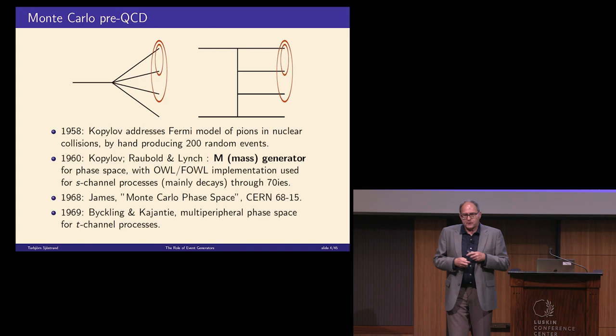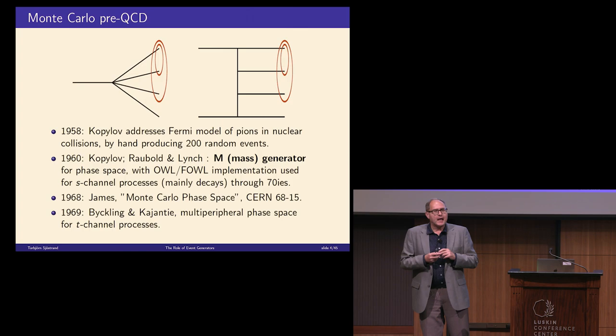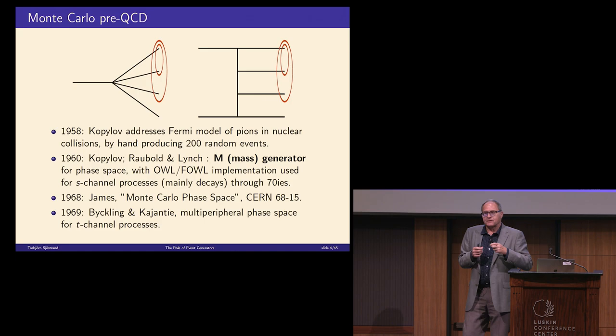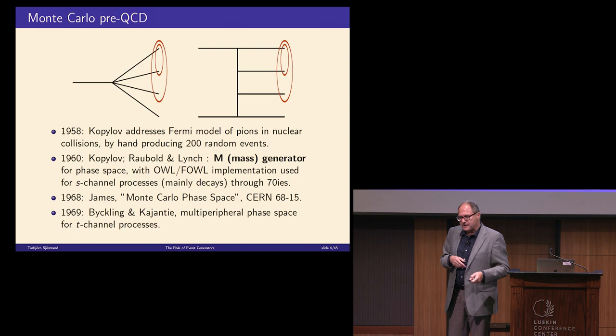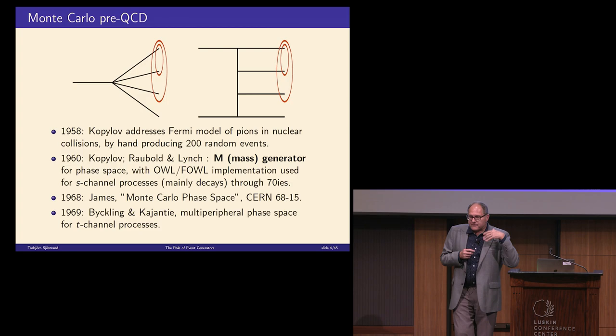If you want to put a starting date to the whole game, 1960 is as good as any. That was when the M generator was introduced. This is a recursive way of handling N-body phase space where you pick off one particle at a time. Each time you do that, you get one mass for the leftover system. In each step, you need to specify a mass and then two angles which are isotropic.